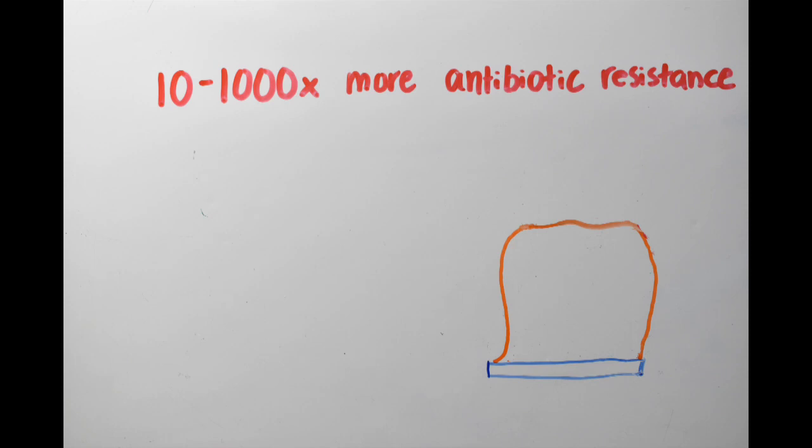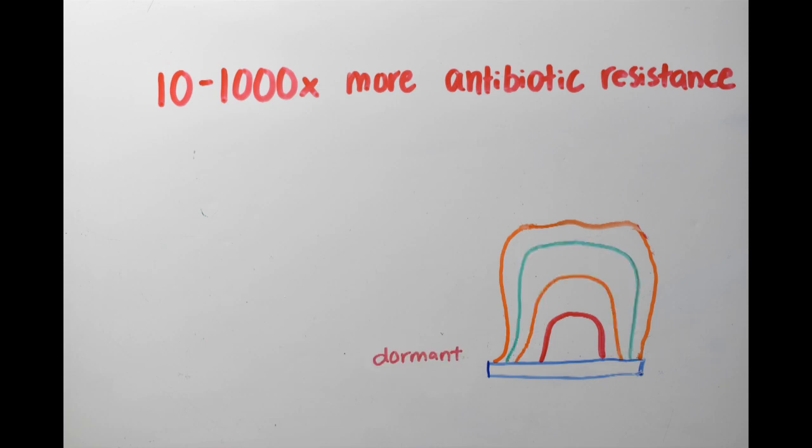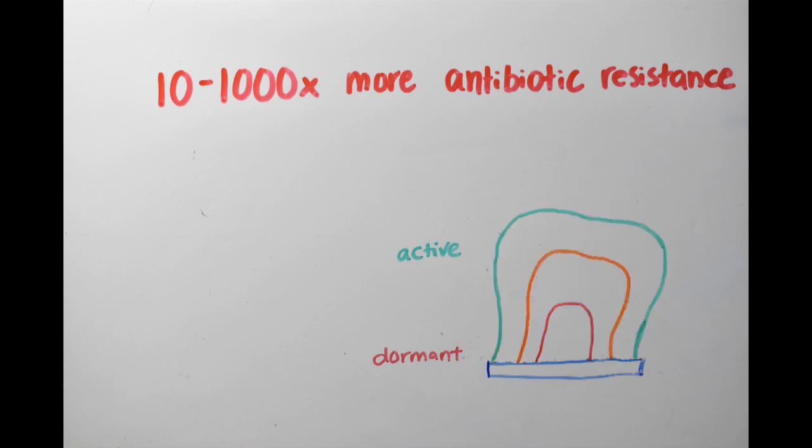Furthermore, bacteria within a biofilm can exist at varying levels of activity, with the core of the biofilm being dormant and the outermost layers being the most active. High metabolic activity makes the outer bacteria more susceptible to drugs, but the dormant bacteria resist killing and can regrow the colony following treatment.